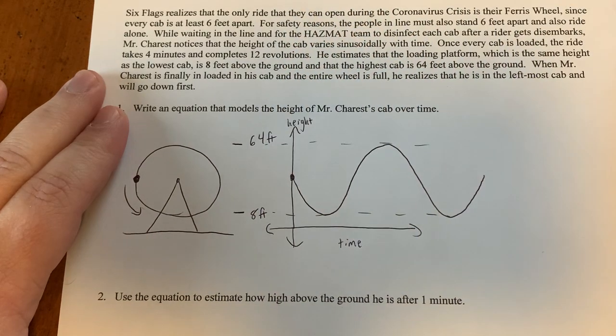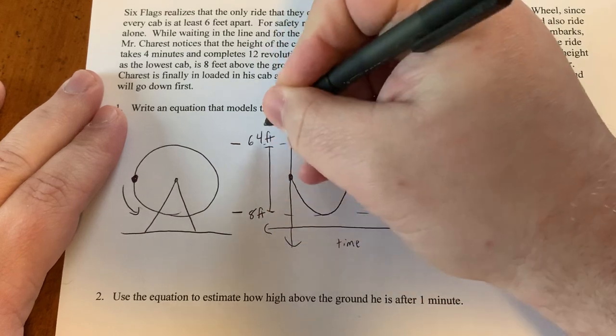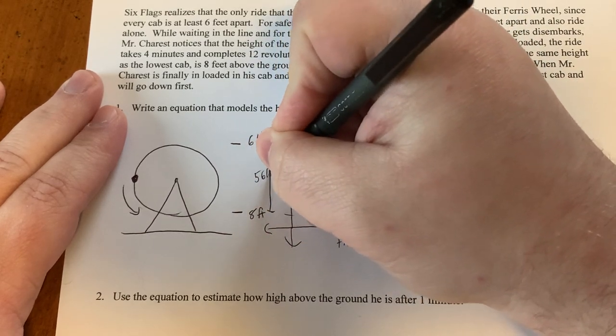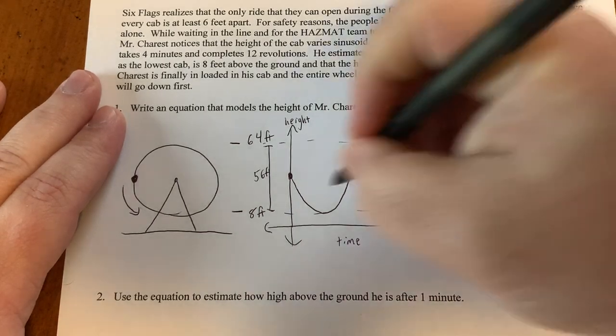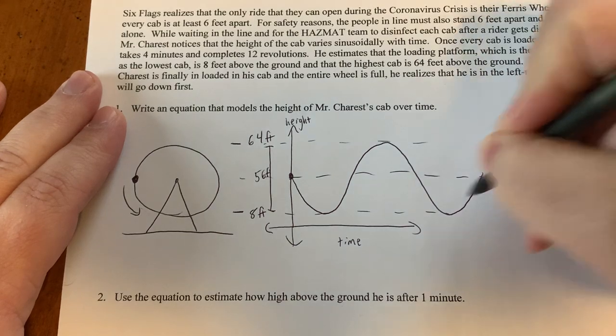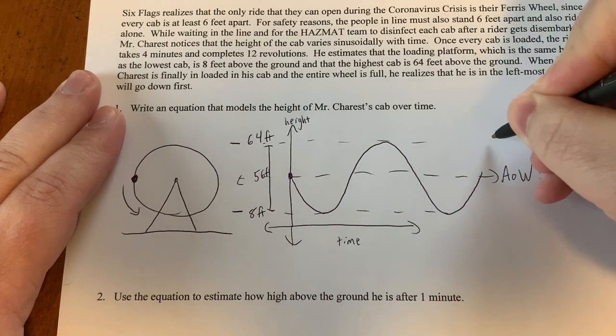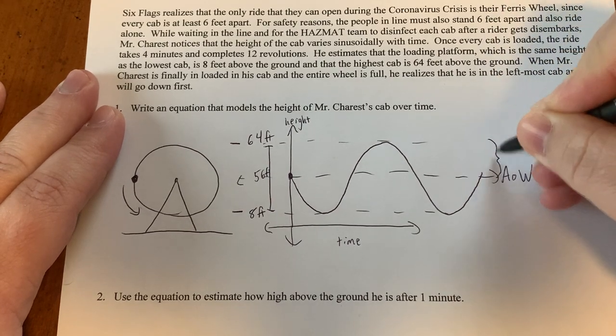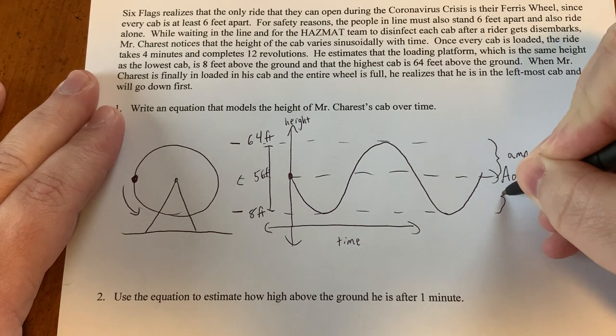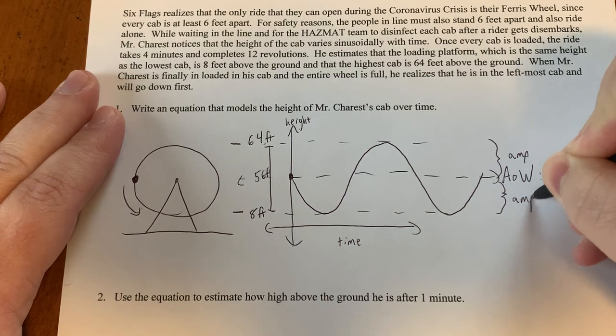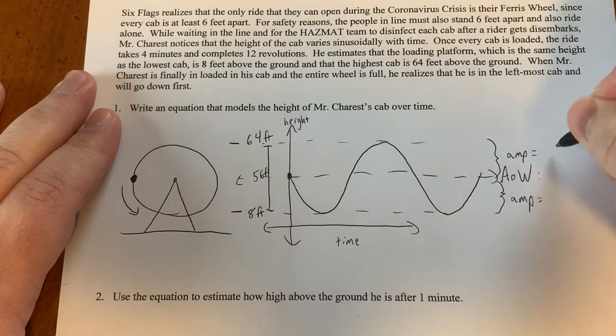So we have a maximum at 64, a minimum at 8. That's a total height. 64 minus 8 is 56. So that's a total height of 56 feet. So smack dab in the middle of that is our axis of wave. And from the top to the axis of the wave is an amplitude. And from the bottom to the axis of the wave is an amplitude. So our amplitude is half our height. Half of 56 is 28.